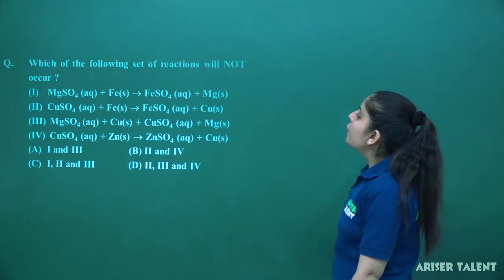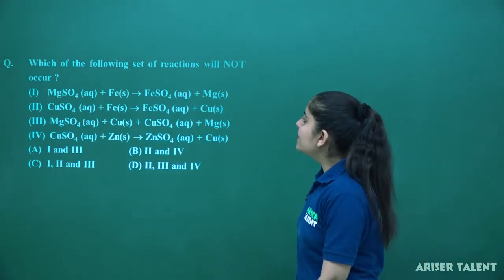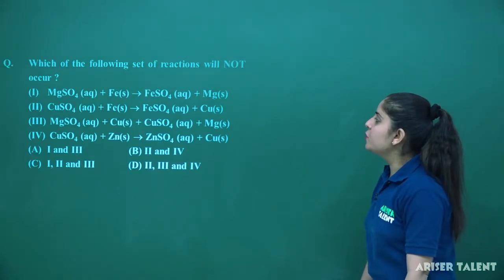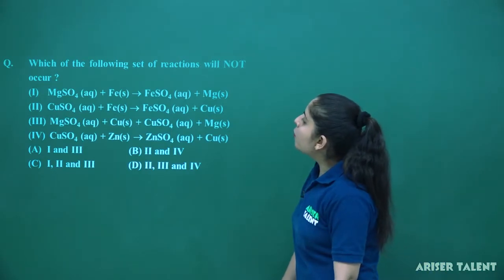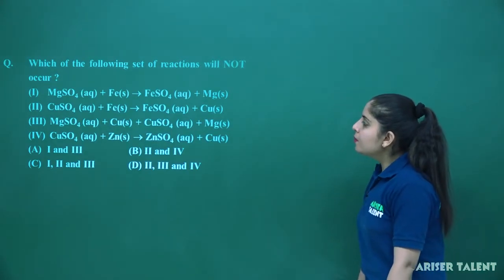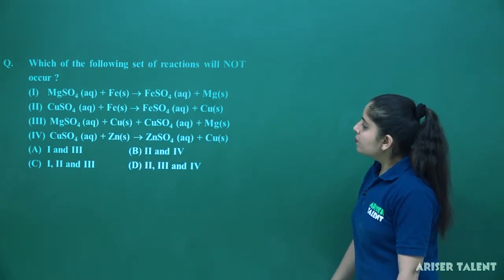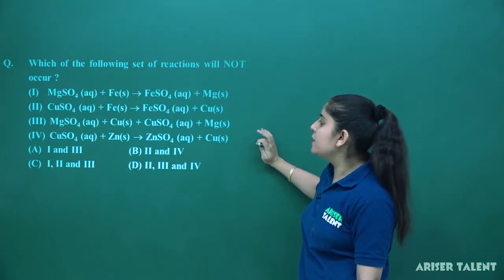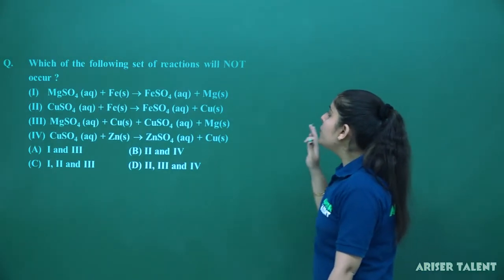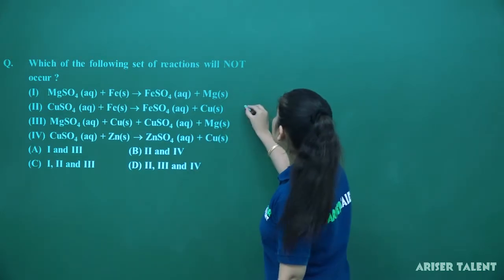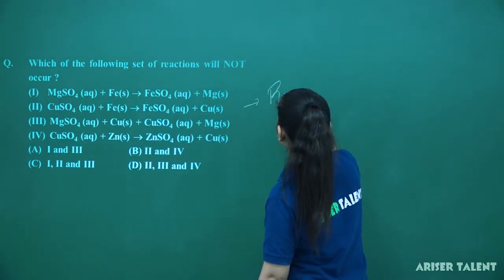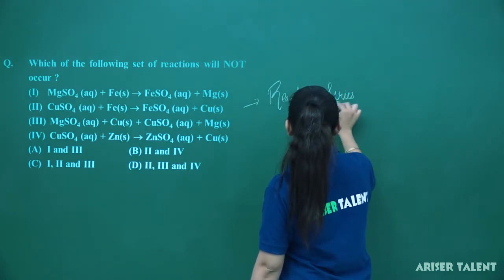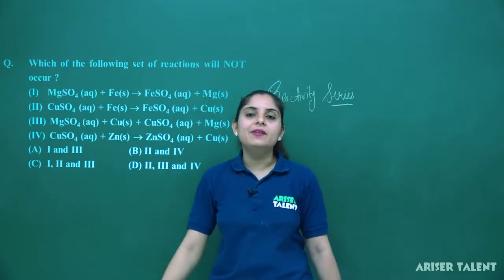Which of the following set of reactions will not occur? Let us check the reactions here. MgSO4 plus Fe gives FeSO4 plus Mg. CuSO4 plus Fe gives FeSO4 plus Cu. MgSO4 plus Cu gives CuSO4 plus Mg. CuSO4 plus Zn gives ZnSO4 plus Cu. This concept basically depends upon your reactivity series. This question particularly depends upon your reactivity series.